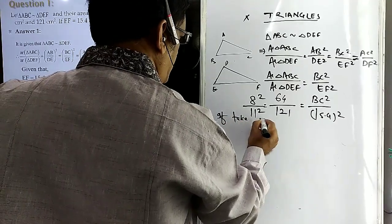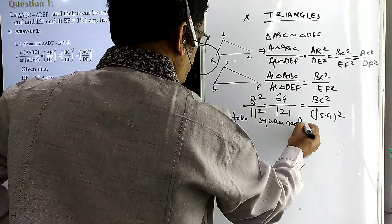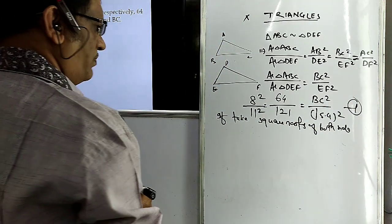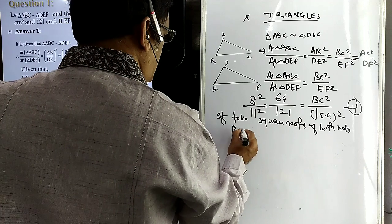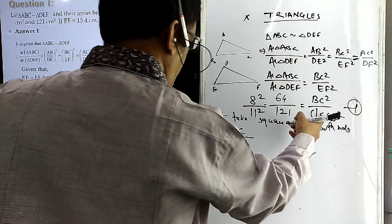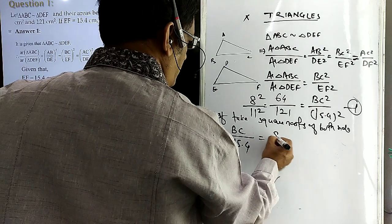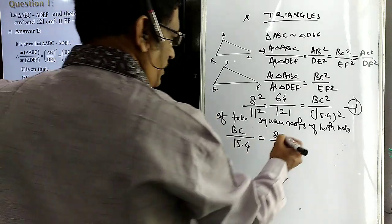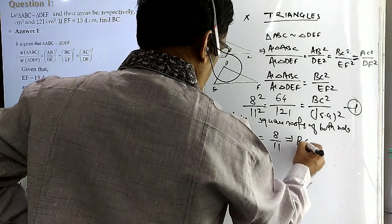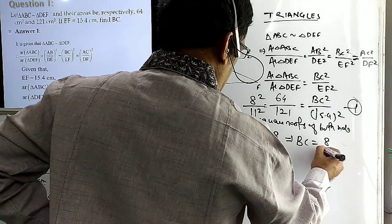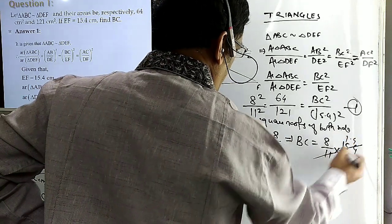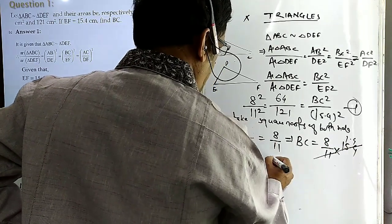If we take the square root of both sides of this equation, then BC by 15.4 equals 8 by 11. And this implies, if you do cross multiplication — we want only BC — so 15.4 crosses over: BC equals 8 by 11 into 15.4. This gives 1.4 multiplied by 8, which equals 11.2 centimeters.